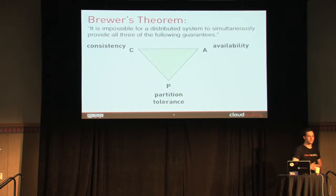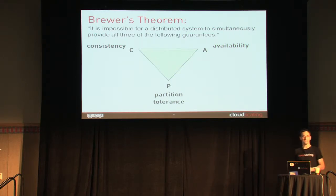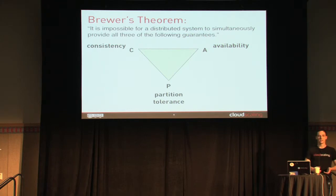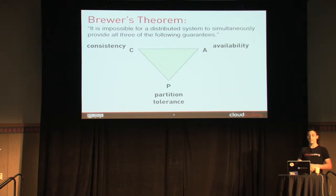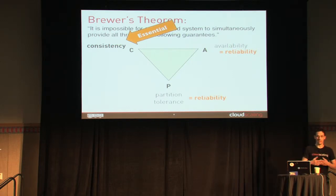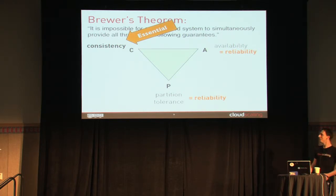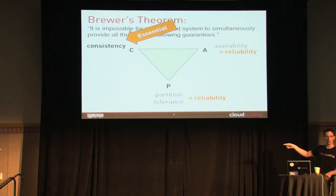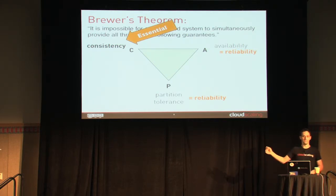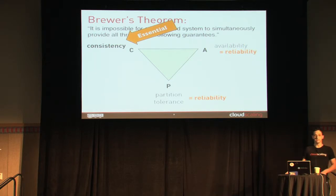There's this thing called Brewer's theorem, also called the CAP theorem, which states that it is impossible for a distributed system to simultaneously provide all three of the following guarantees: consistency, availability, and partition tolerance. So Amazon, by having a distributed system through whatever mechanism their system is distributed — if it is truly distributed — then you can only get two of these three. And that means that for block storage, you have to have consistency. This is a problem. You absolutely have to have consistency, which means you have to decide to have availability or partition tolerance. Both of those affect your reliability, which means that in a distributed block storage system, you cannot have reliability.